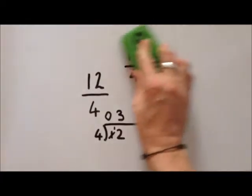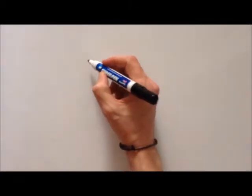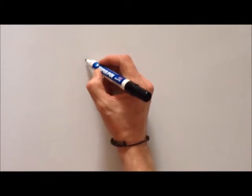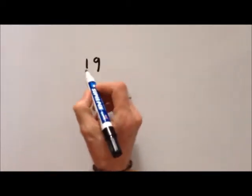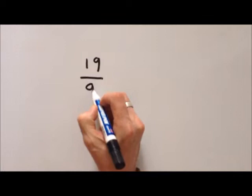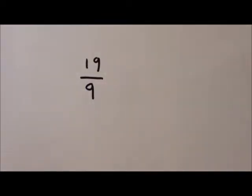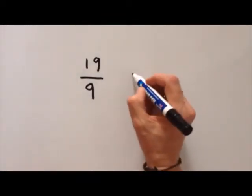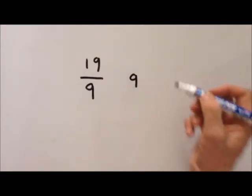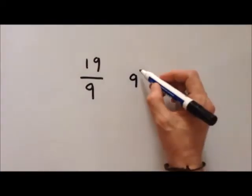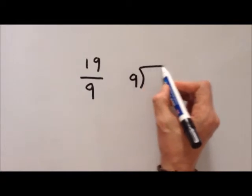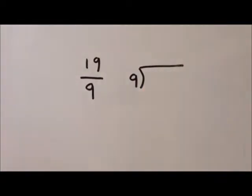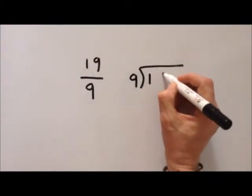Let's do another one. 19 over 9. Ok so now we put this in a bus stop with the denominator on the outside and the numerator on the inside here. 19.